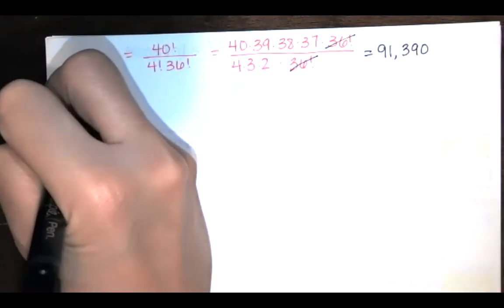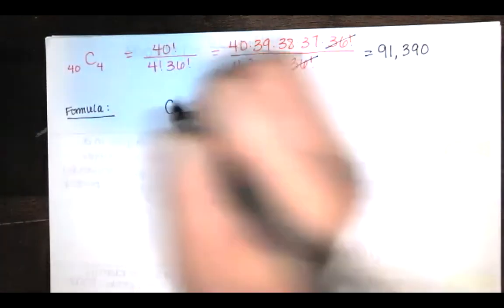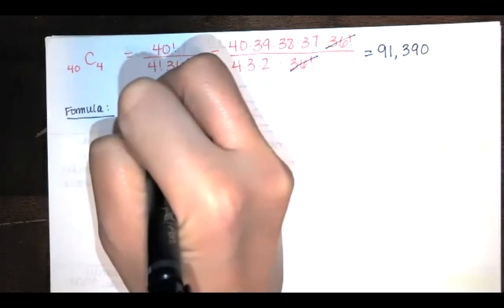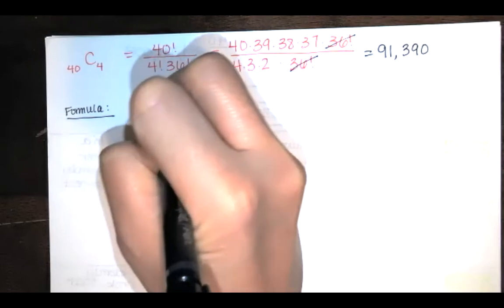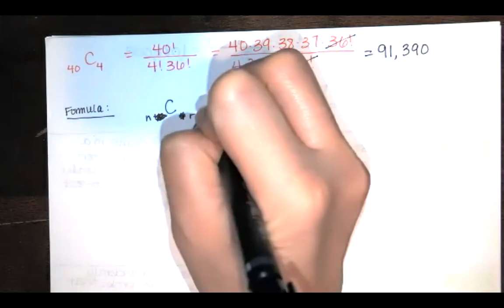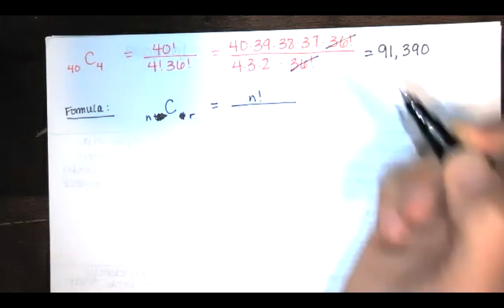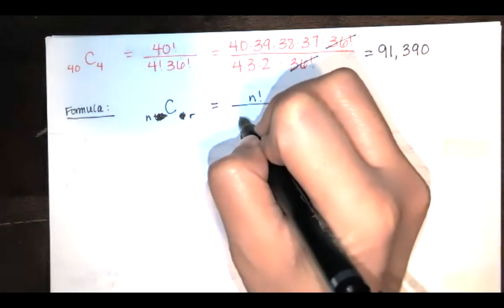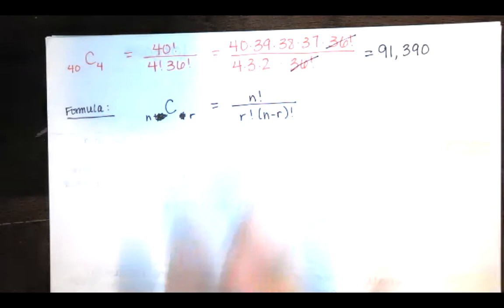Here's the formula in general. If you're choosing r out of n available items, you take n factorial and you divide by r factorial times n minus r factorial. Now you can always just use this formula as we just did. I do want to point out the intuitive approach as well.